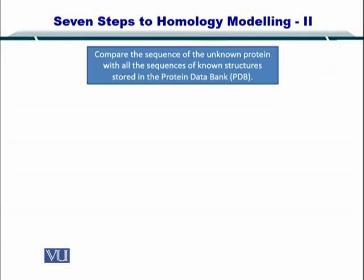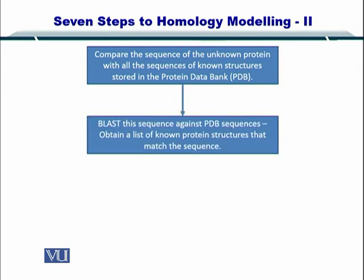The first step is to compare the sequence of the unknown protein — that is, the protein which has an unknown structure — with all the sequences of proteins whose structures are known. This information is found in the protein databank, the PDB database, where you can find which proteins have structures reported for them. You then compare the sequence of the protein with unknown structure against all the proteins whose structures are known, blast them, and find out the proteins which have the highest score.